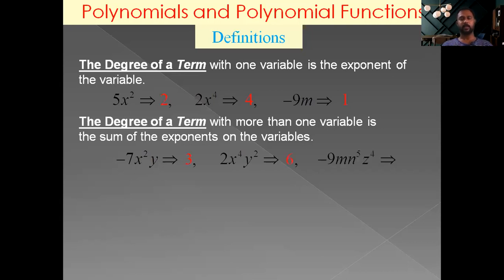For a term with three variables m, n, and z, with respective powers 1, 5, and 4, the degree of the term is 1 plus 5 plus 4, that is 10.